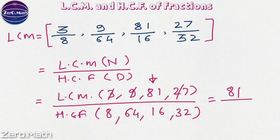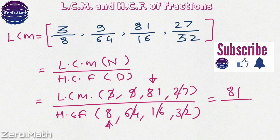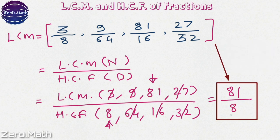Let us figure out the HCF of the denominator numbers. To figure out HCF, we will find out the lowest number among the given numbers, that is 8. Let us check whether 8 is a factor of 64. Yes. Whether it is a factor of 16. Yes. It is a factor of 32 as well. Hence, the HCF of the given numbers has to be 8. Hence, the LCM of the given fractions is 81 over 8.